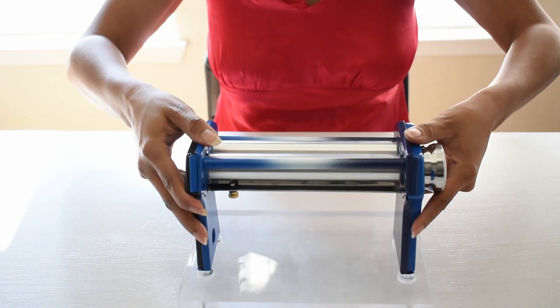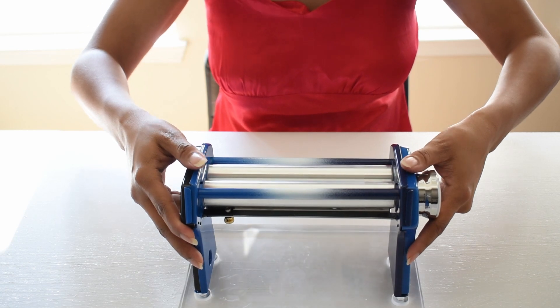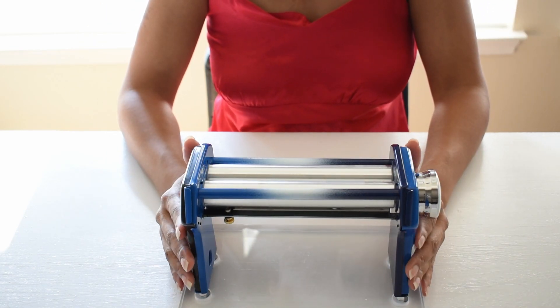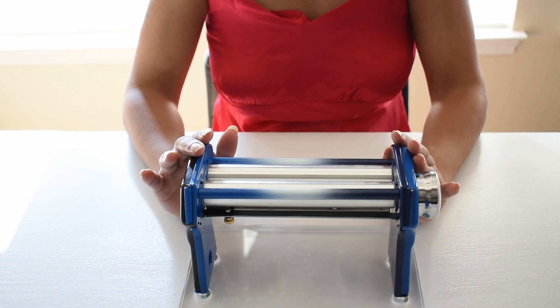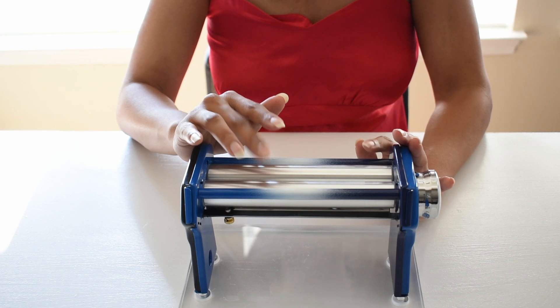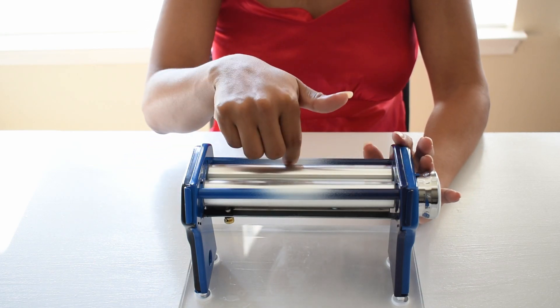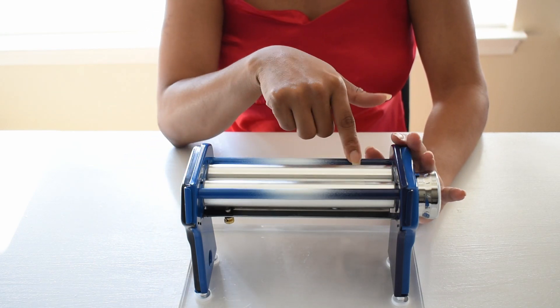Now for those who have worked with polymer clay in the past you know that on any other machine whether it's a clay conditioning machine or perhaps a basic Atlas machine or any other pasta machine out there, when you are using a color it will get trapped between the rollers and the blades.